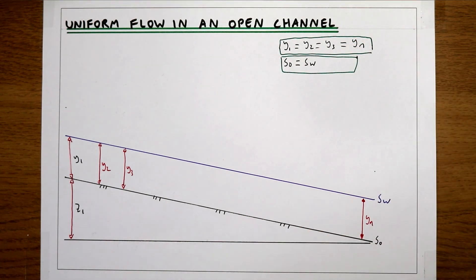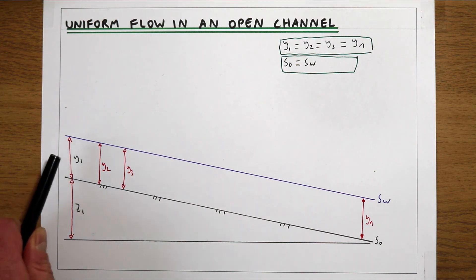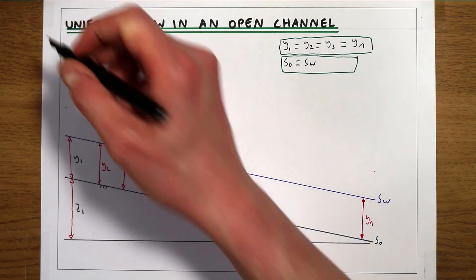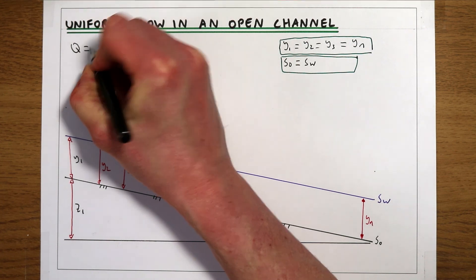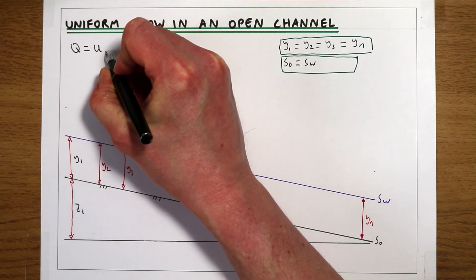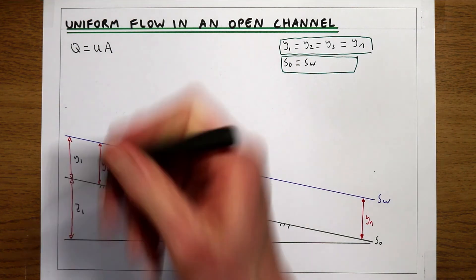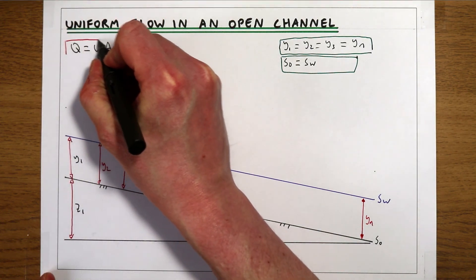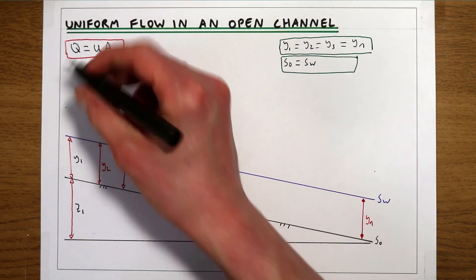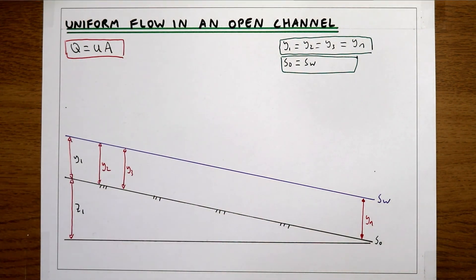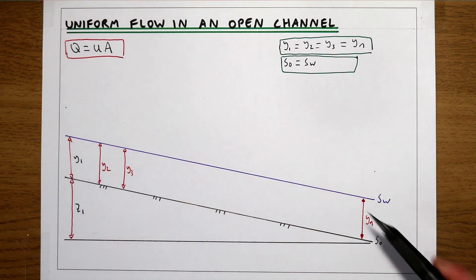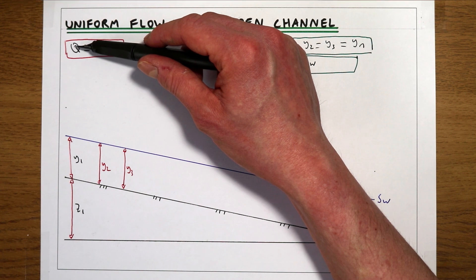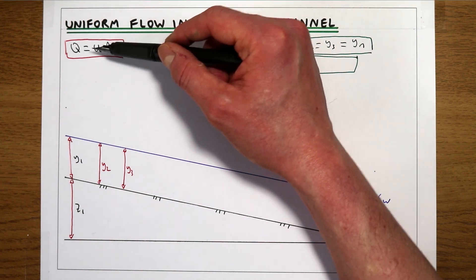We can also see that if our flow depth is the same all the way down the channel, and our fundamental definition of flow from continuity is Q equals U times A, then in a steady system — where our flow rate remains the same with time — if the flow depth is the same all the way down the channel, our area is always going to be the same. If Q remains the same, then our velocity must also remain the same.